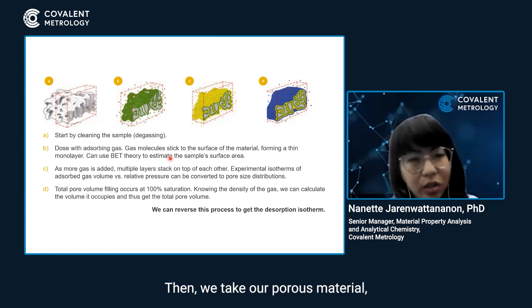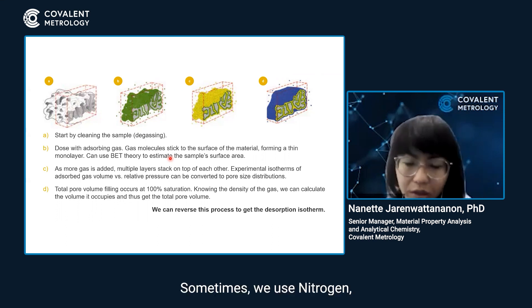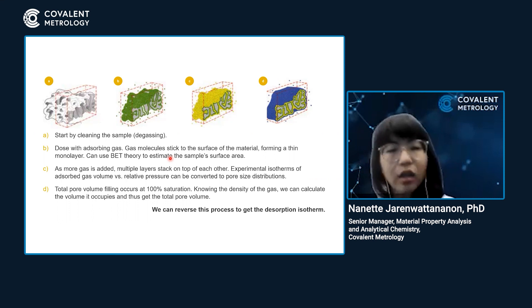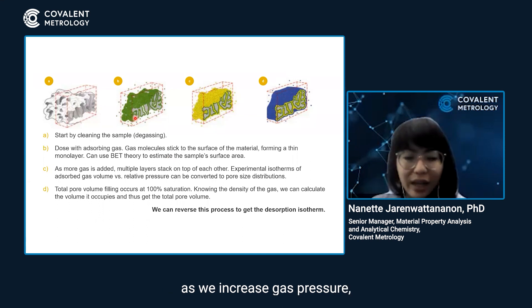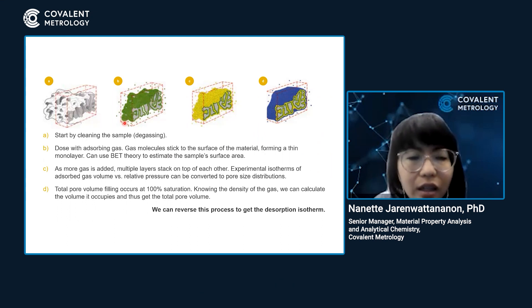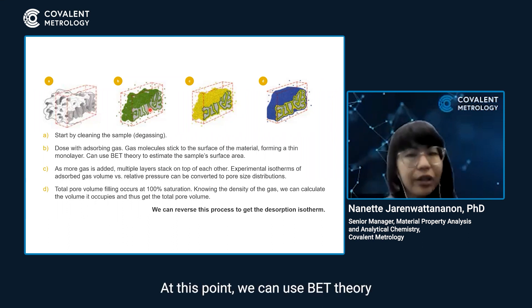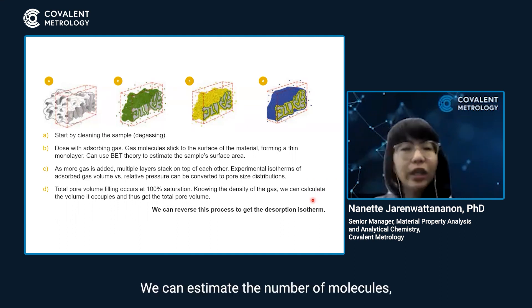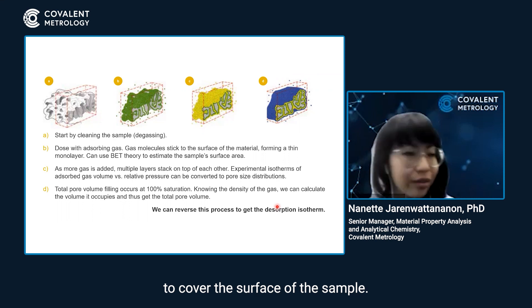Then we take our porous material and dose it with an adsorbing gas — sometimes nitrogen, sometimes argon. The choice of gas depends on your particular application. As we increase gas pressure, gas molecules start to slowly stick to the surface of the material, forming a thin monolayer first. At this point, we can use BET theory to estimate the surface area of a sample — essentially estimating the number of molecules required to cover the surface.